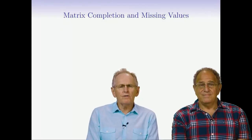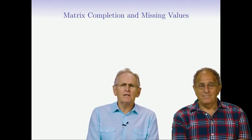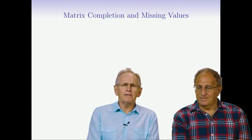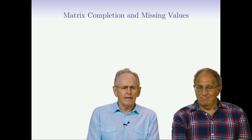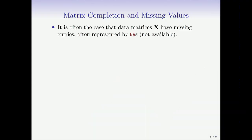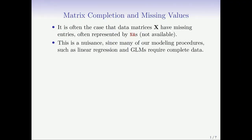Welcome back. This is an additional section in this chapter that's based on some new material in the second edition of the book. It's called Matrix Completion and Missing Values. It's often the case that data matrices X have missing entries, often represented by NA, not available. This is a nuisance since many of our modeling procedures, especially multivariate procedures such as linear regression and GLMs, require complete data, as do principal components.